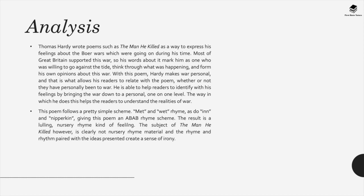During the Victorian age, many people supported Great Britain's expansion of its empire. However, conflict arose when Britain encountered Dutch settlers trying to establish their own territory in South Africa. Hardy makes this war and its impacts vivid and personal. The poem follows a simple ABAB rhyme scheme, which creates an almost nursery-rhyme feeling — ironic given that the content is about war and killing. This irony is intentional.